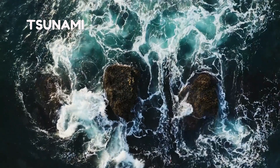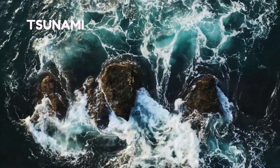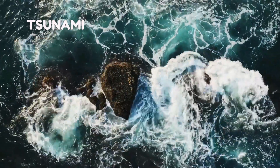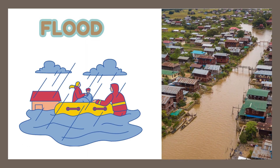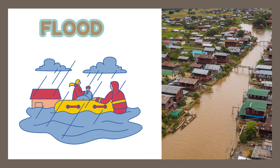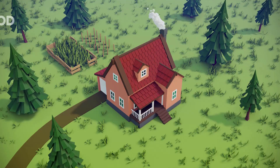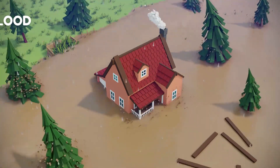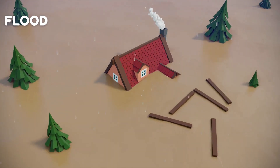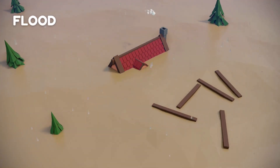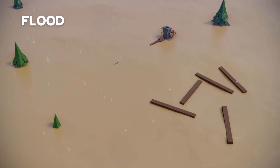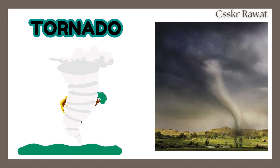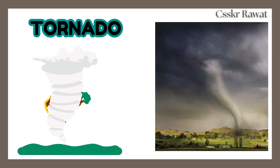Tsunami. Tsunamis happen when massive oceanic waves are generated by a volcanic explosion or an earthquake. Flood. Floods happen when there is an excess of water in a single area — a river or lake overflowing, or a period of heavy rain could cause this.